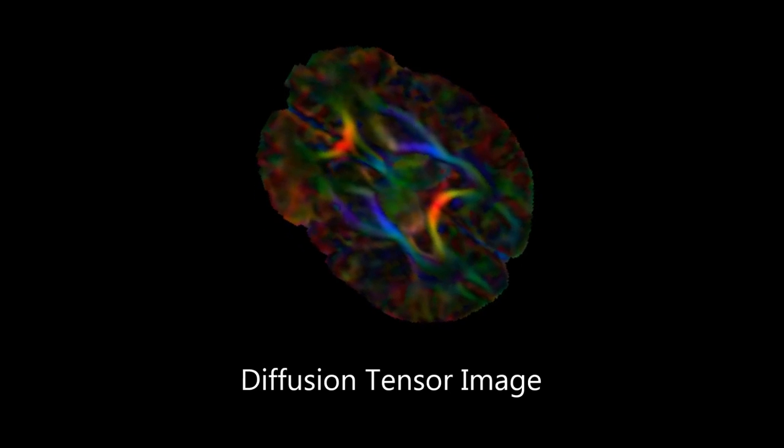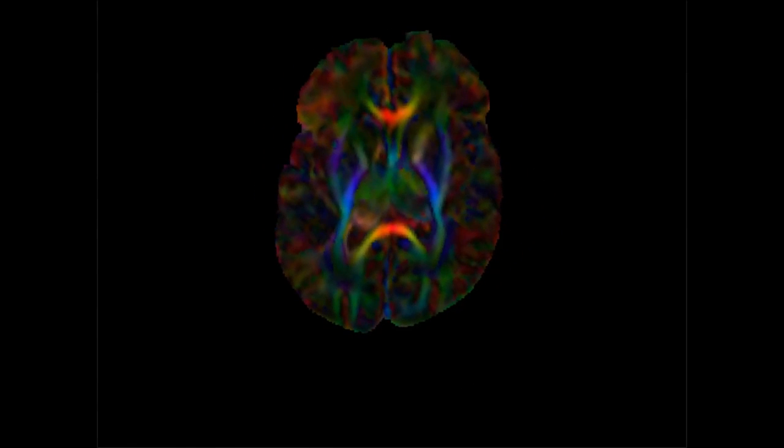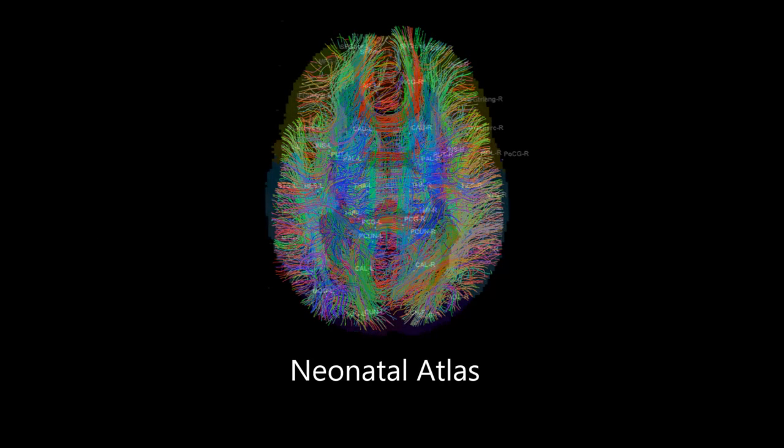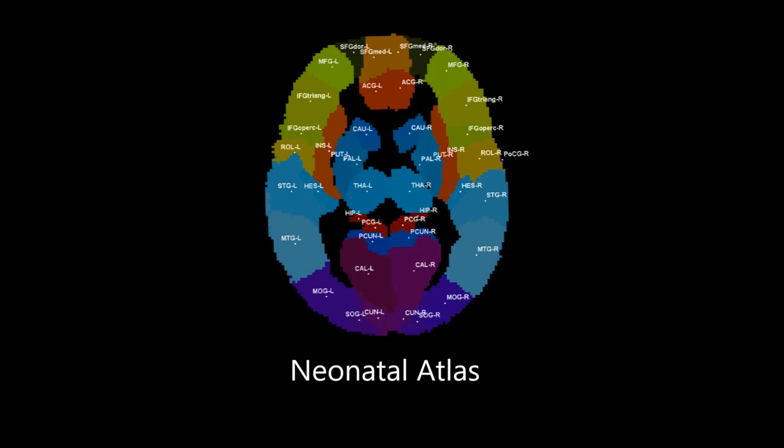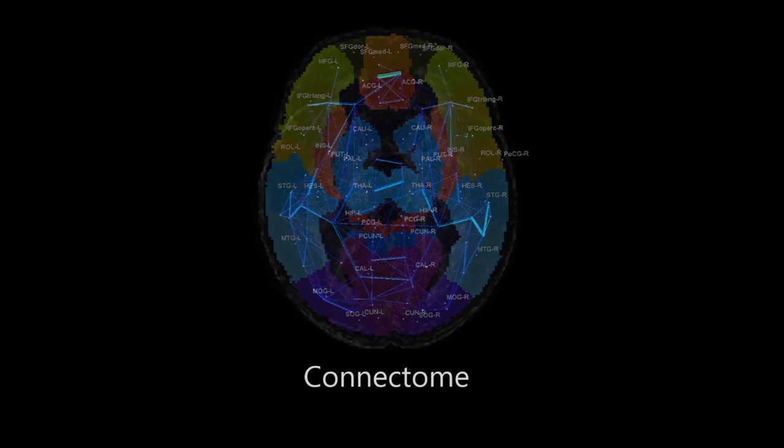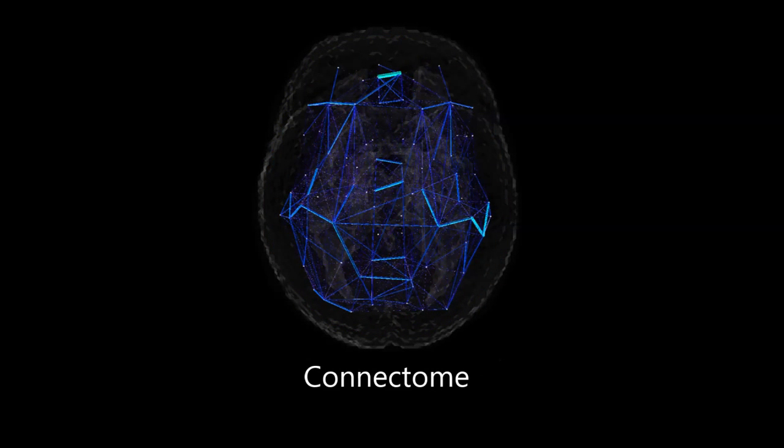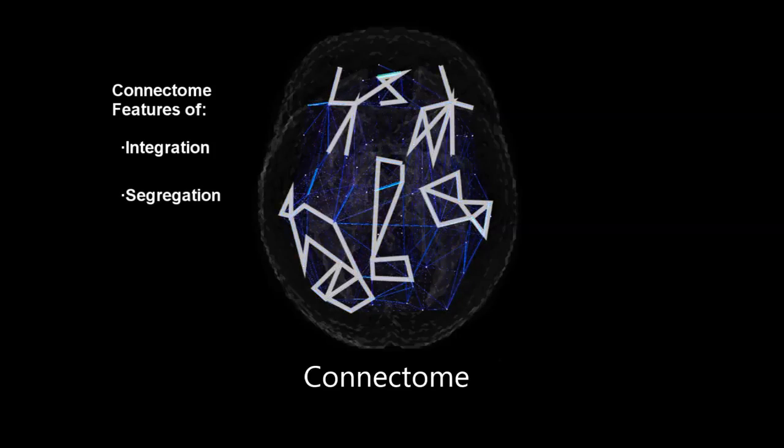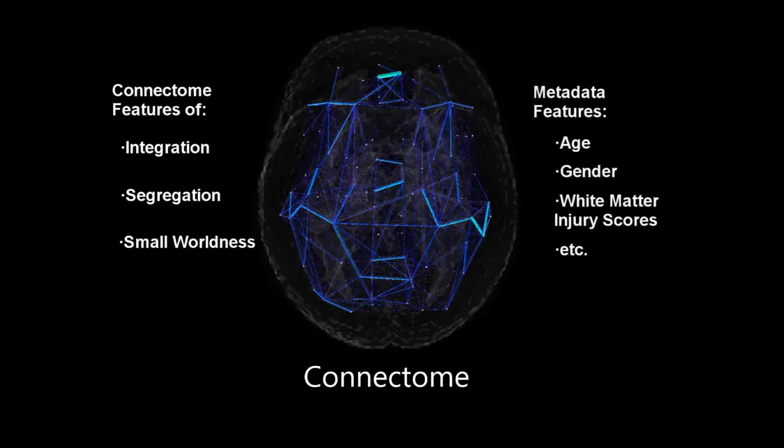For each full-brain DTI, neuronal pathways were delineated via tractography. Using a neonatal atlas of 90 anatomical regions, a connectome was constructed representing the connectivity between each region pair. For each connectome, network features of integration, segregation, and small-worldness were extracted. We combined these features with metadata and information extracted from the T1 MR images, including the presence of white matter lesions.